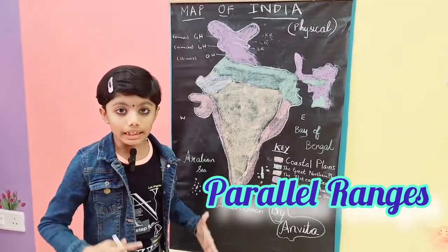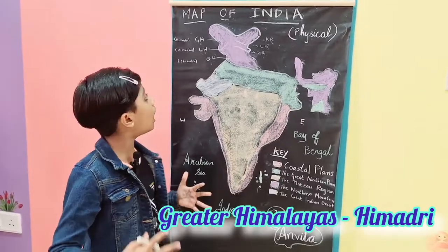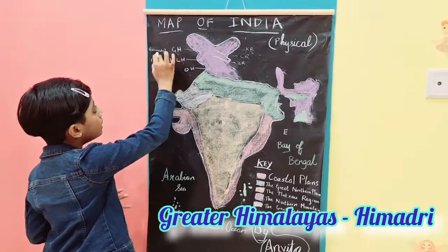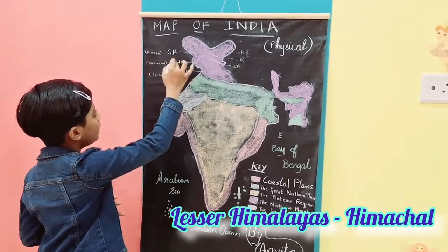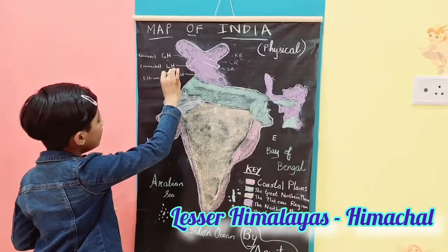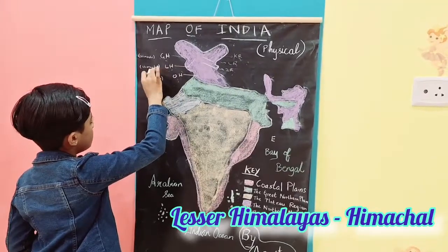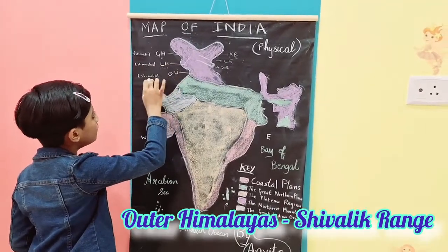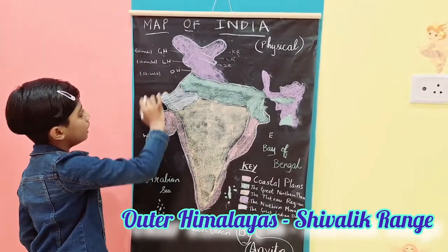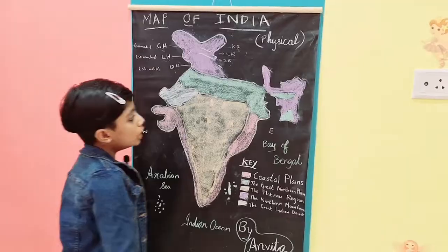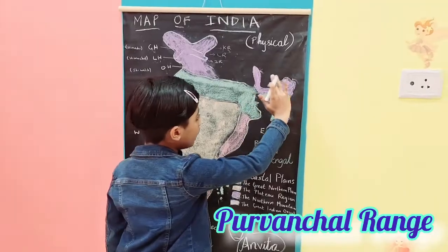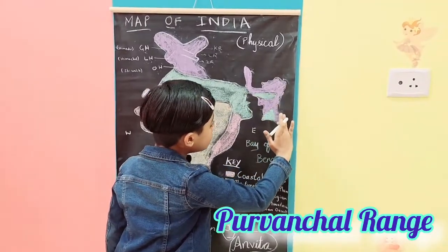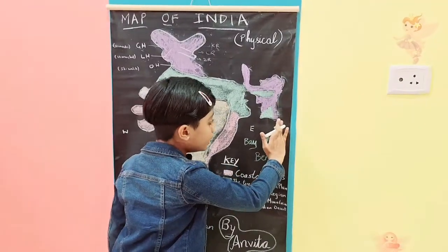The parallel ranges are the greater Himalayas, i.e. the Himadri; the lesser Himalayas, i.e. the Himachal; and the outer Himalayas, i.e. the Shivalik. The Purvanchal range forms the eastern boundary of India.